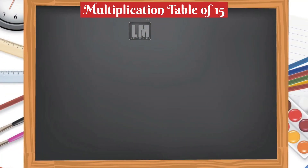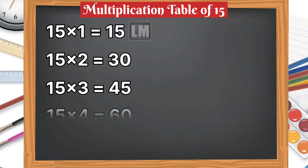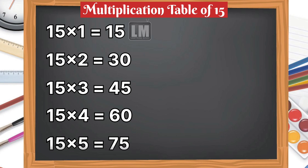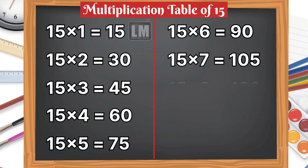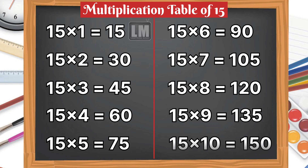Let's learn table of 15. 15 1s are 15, 15 2s are 30, 15 3s are 45, 15 4s are 60, 15 5s are 75, 15 6s are 90, 15 7s are 105, 15 8s are 120, 15 9s are 135, 15 10s are 150.